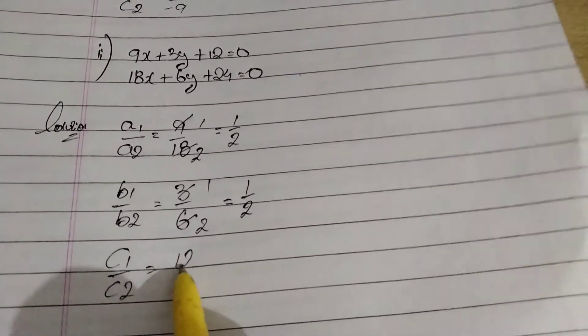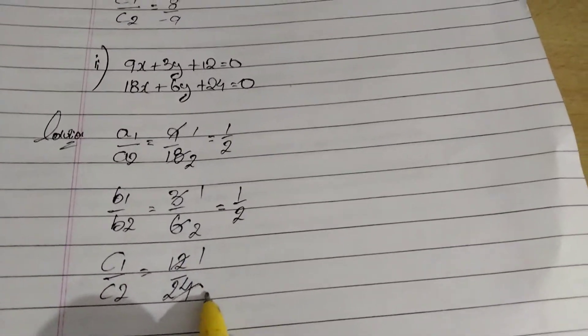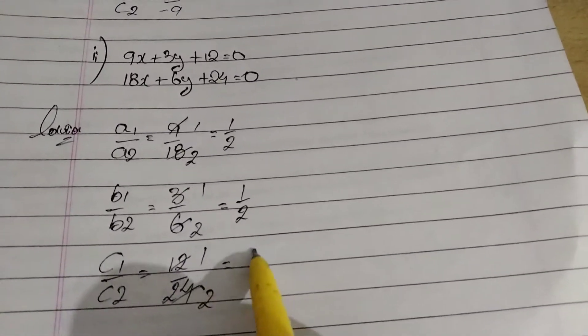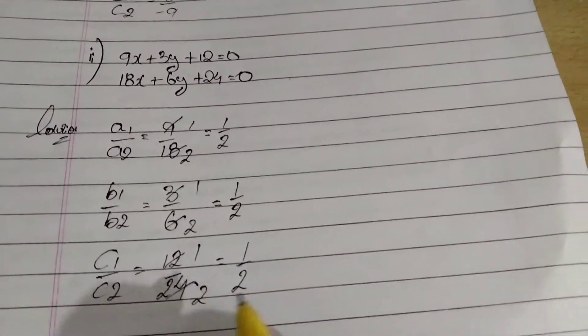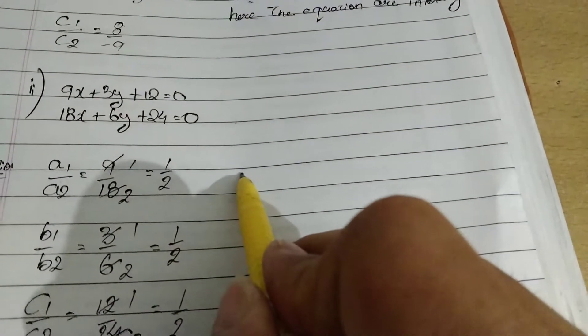The last one. So C1 by C2. That is 2 and 24. We are getting 2 of the 12, 2 of the 24. So we are getting the same answer.